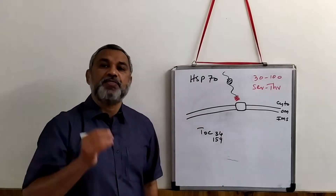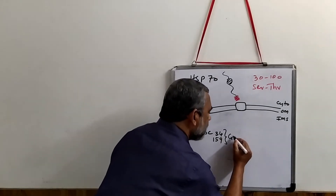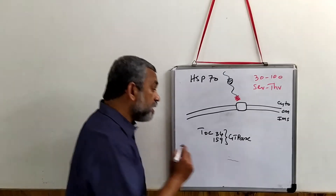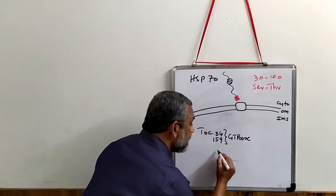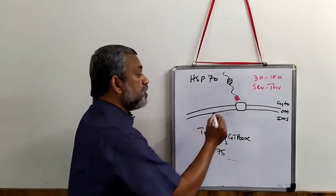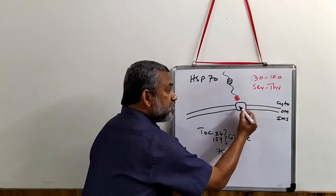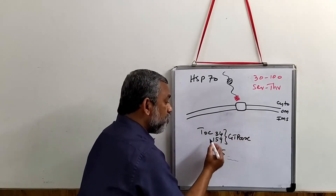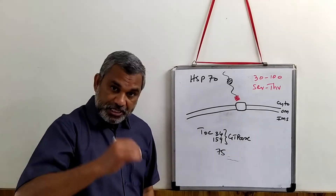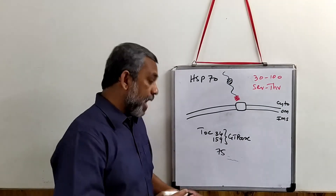The TOC complex components are nothing but a kind of GTPase. There is a third component, TOC75, that forms the channel. Therefore this complex is made up of two GTPases and TOC75, which acts as a channel.